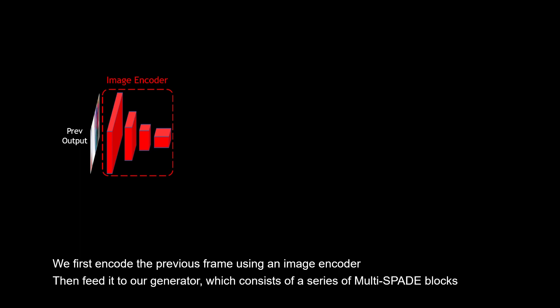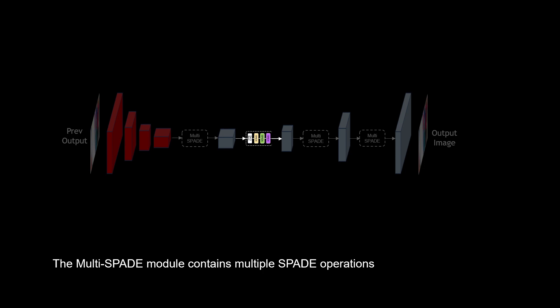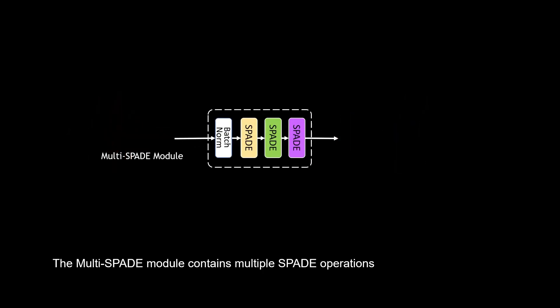For our network architecture, we first encode the previous frame using an image encoder, and feed it to our generator, which consists of a series of multi-SPADE blocks. The multi-SPADE block contains multiple SPADE operations. We first embed the input labels and feed the features in the corresponding layer to the first SPADE layer.